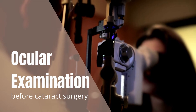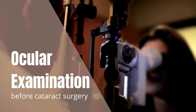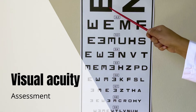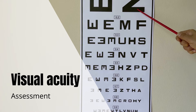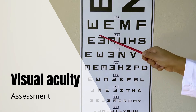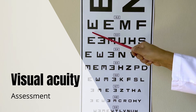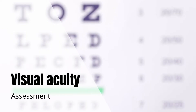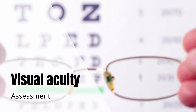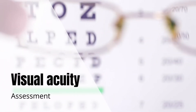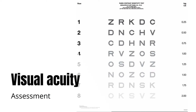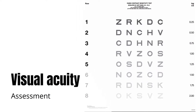Visual acuity for both eyes, including projection of light for those with vision less than 3/60 with poor view of the fundus. Visual acuity is the conventional and standard test of visual function in patients with cataracts. However, some patients retain relatively good visual acuity yet complain of poor vision. In these patients, other tests of visual function such as contrast sensitivity should be evaluated.